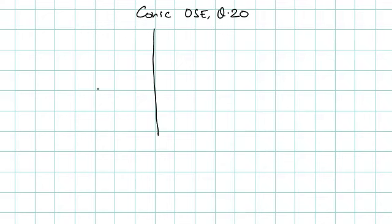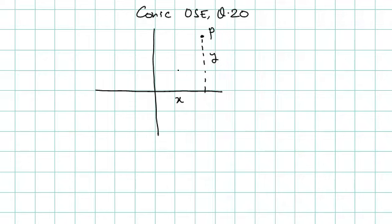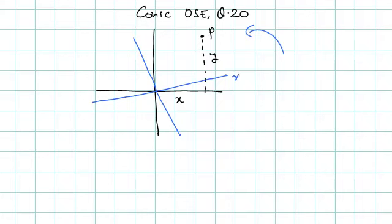Suppose there is a point P with coordinates X, Y in the old system. This is point P whose X coordinate is X and Y coordinate is Y in the old system. Now I rotate this coordinate system through an angle theta in the anti-clockwise direction. So my new X axis is like this and new Y axis is like this — call them X dash and Y dash.